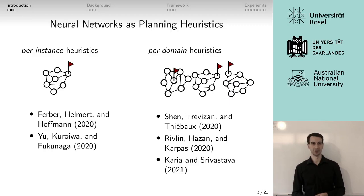And indeed we can. There has been some previous work which can be broadly classified into two groups: either per-instance heuristics where you train the neural network to generalize across a single state space with a fixed goal, or per-domain heuristics where the neural network generalizes across different state spaces from the same planning domain.